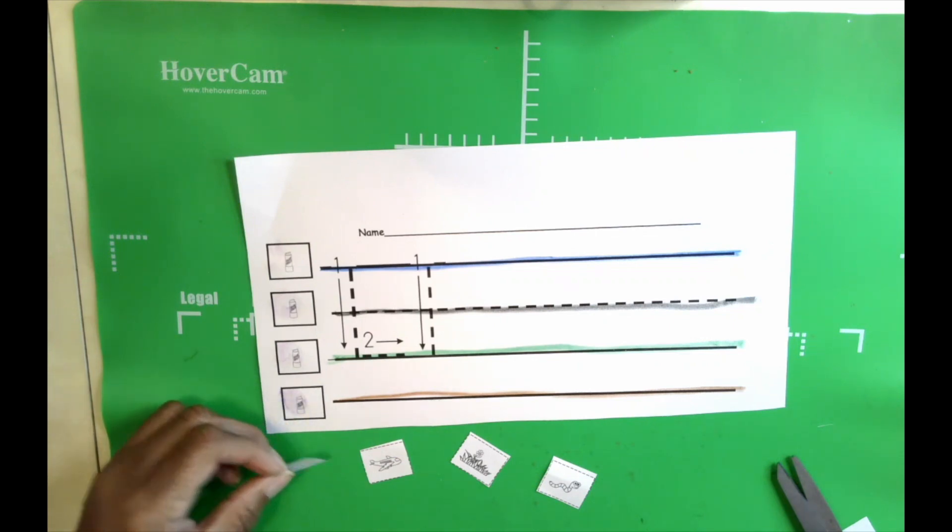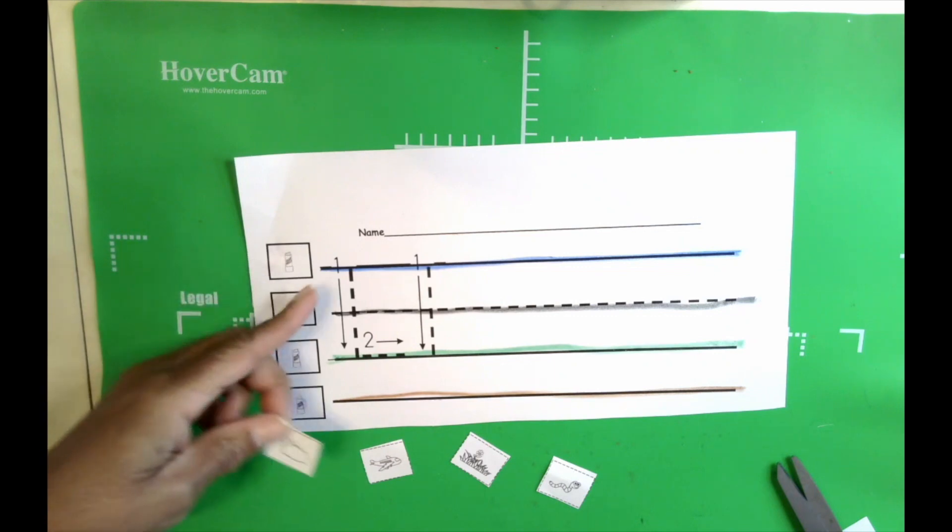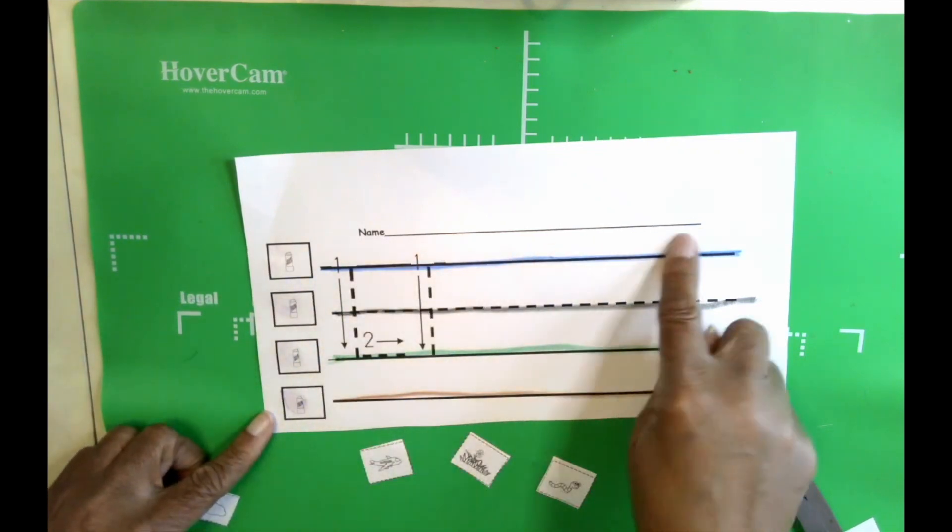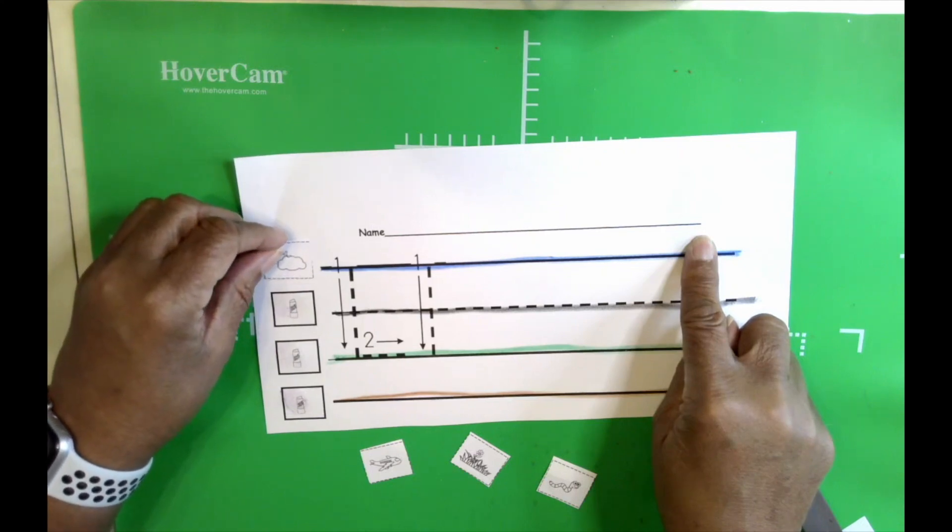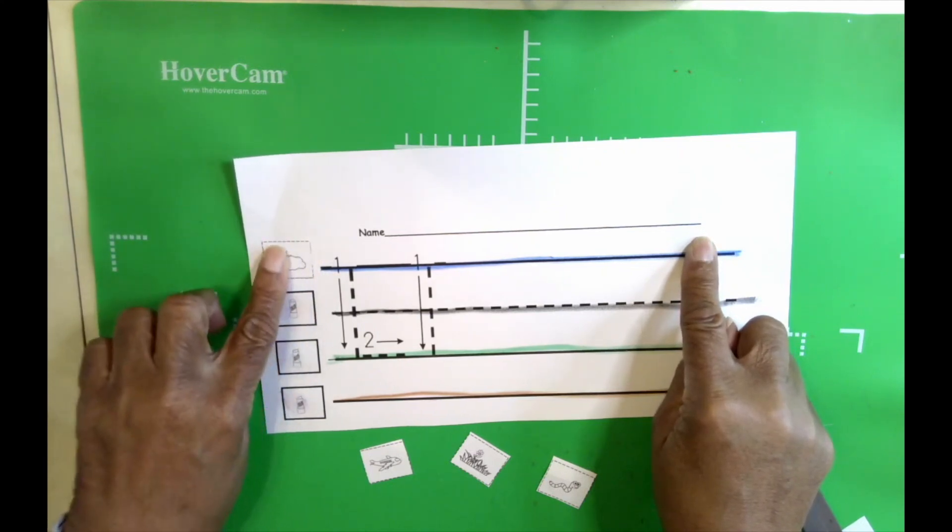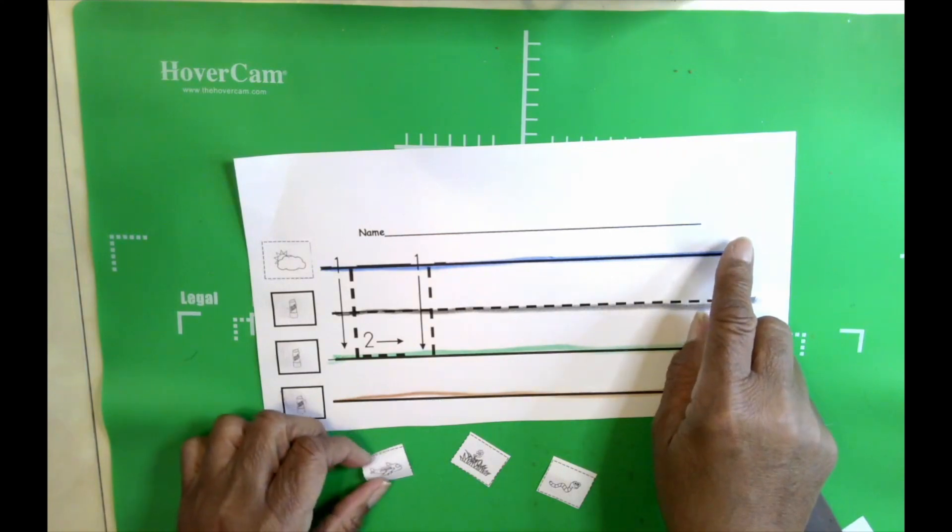Now, our first line, as you remember, is our skyline. So we're going to take the picture that looks like a cloud and glue it there. That represents the sky.